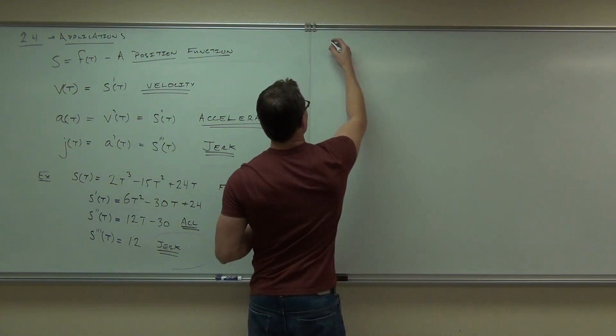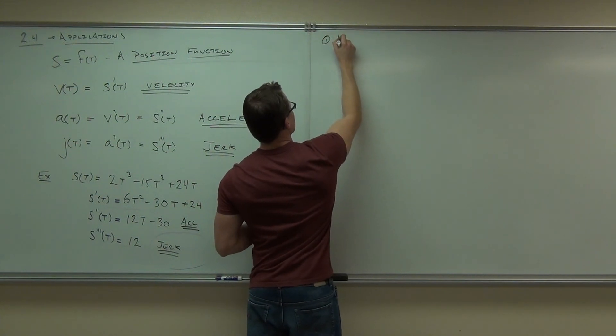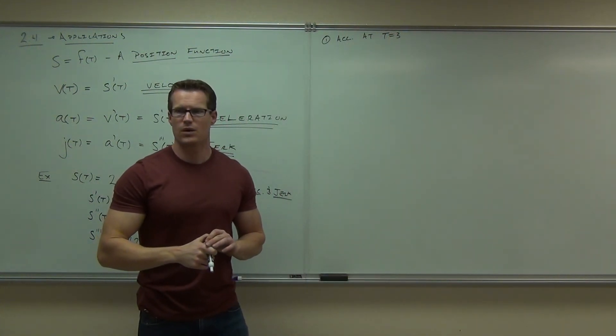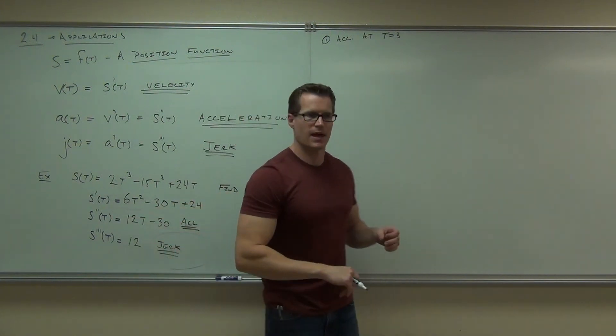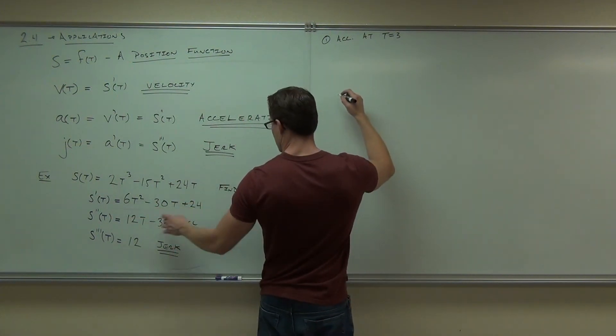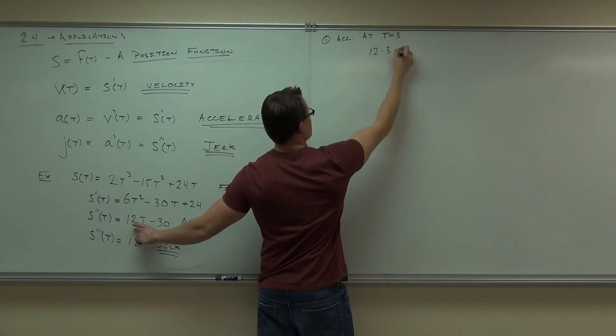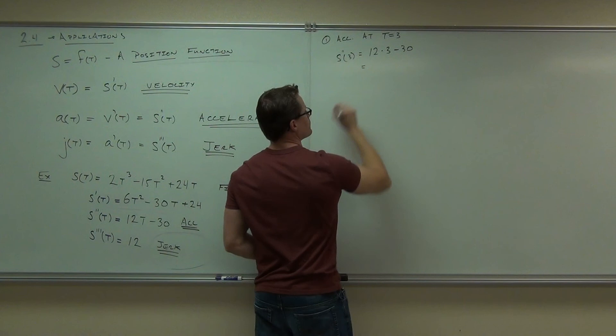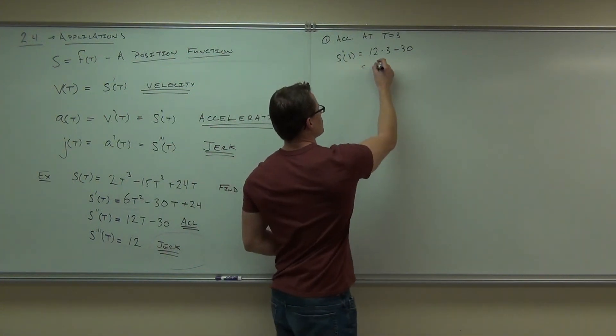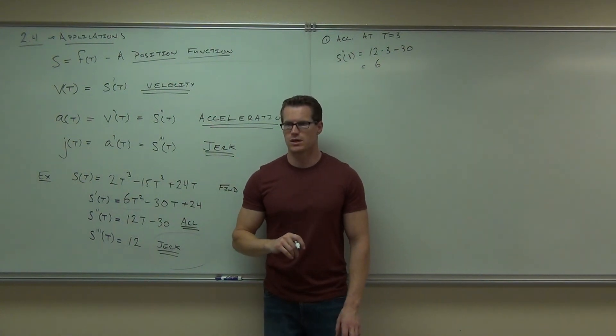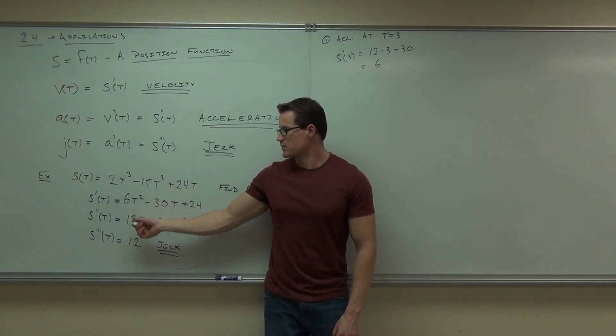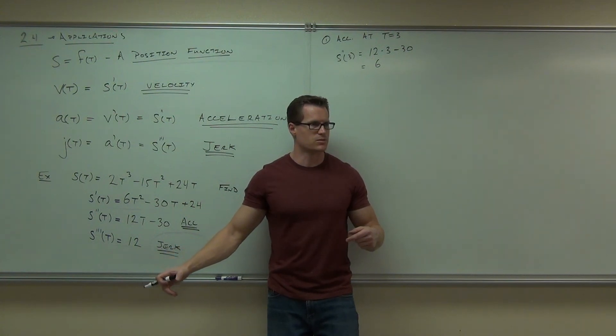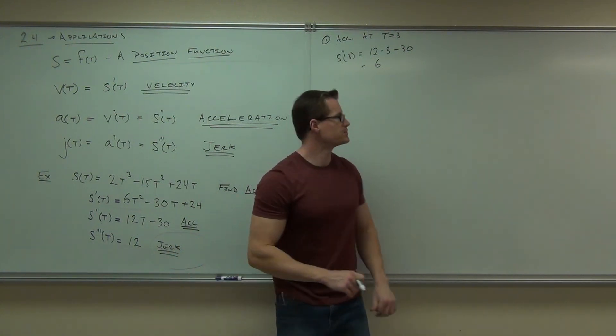Acceleration, though, would be interesting. Could I ask you what's the acceleration when t equals 3? So acceleration at t equals 3. How would you find it? Yeah, we're going to go back down to this one, S double prime. That is our acceleration. So if we plug in 3, we get 12 times 3 minus 30. 6. 6 feet per second squared would be acceleration. This would be feet per second, feet per second squared, should be feet per second cubed.